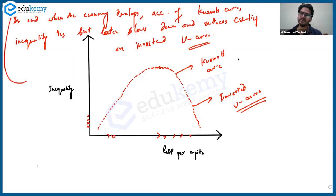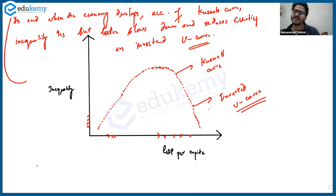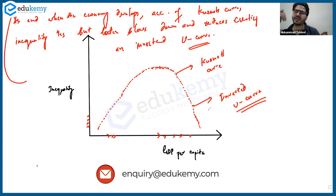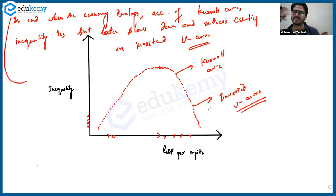For the practical explanation — in India, we have seen after the 1990s a higher growth rate but also higher inequality. Slowly and gradually, if India keeps growing over the next 50 years, you will see that inequality will slowly and gradually come down. However, it's not necessarily guaranteed — it is just a hypothesis.